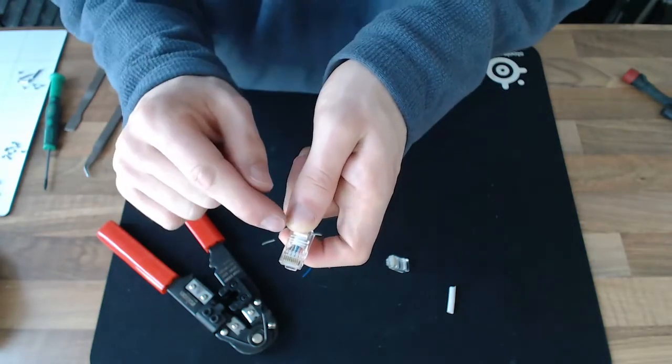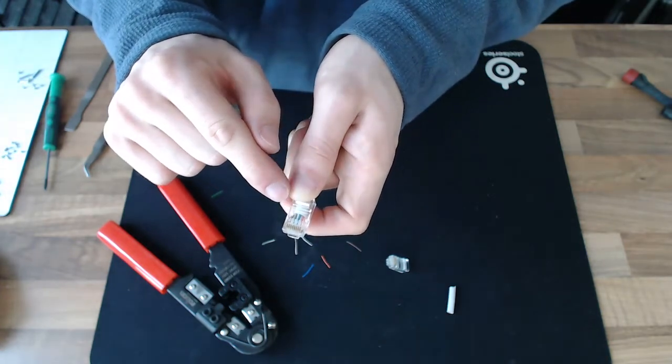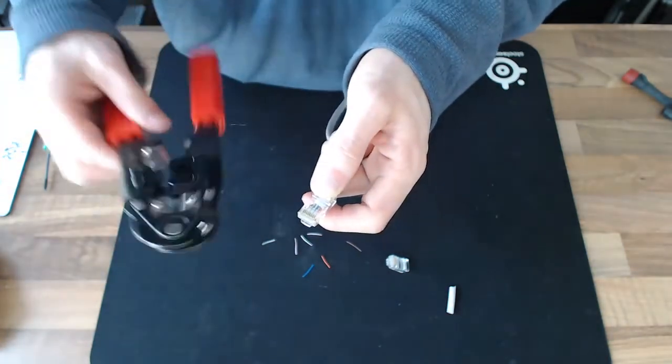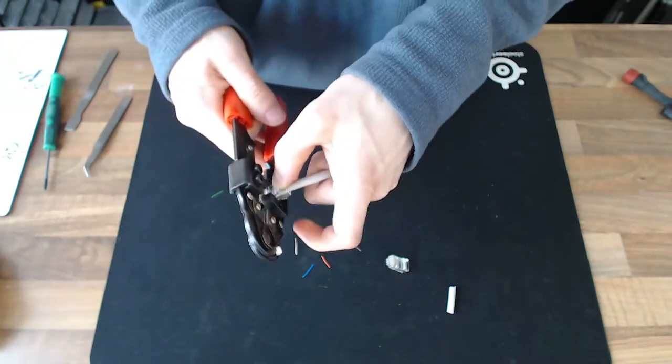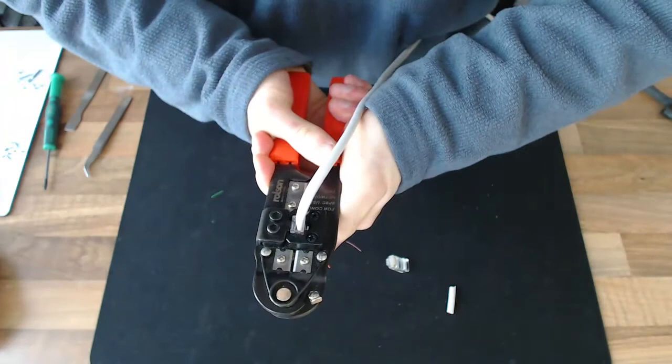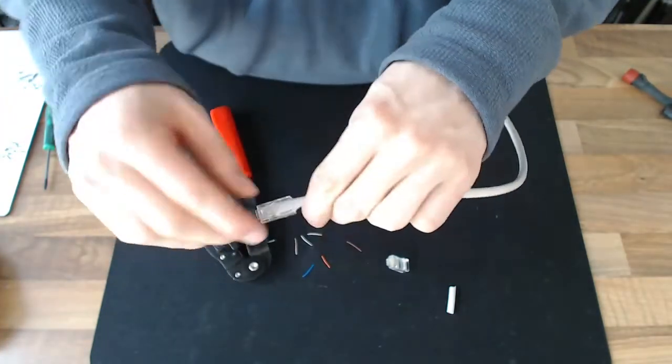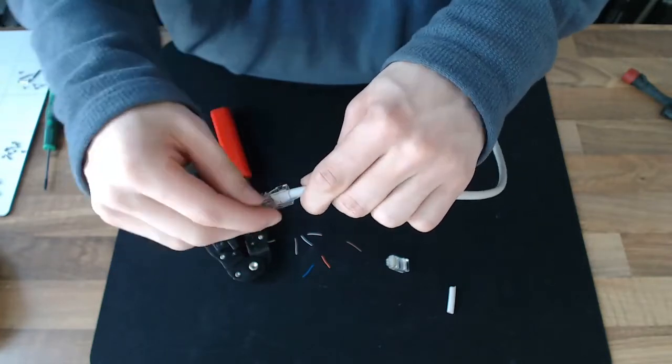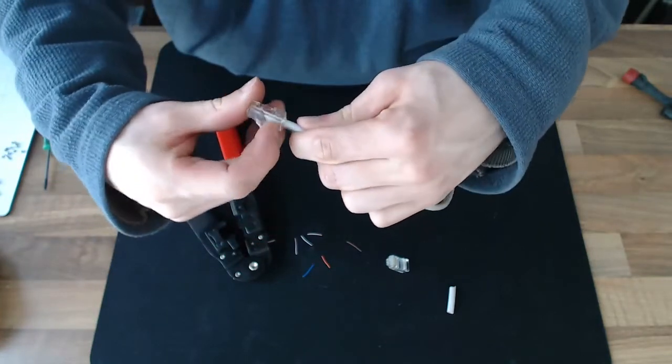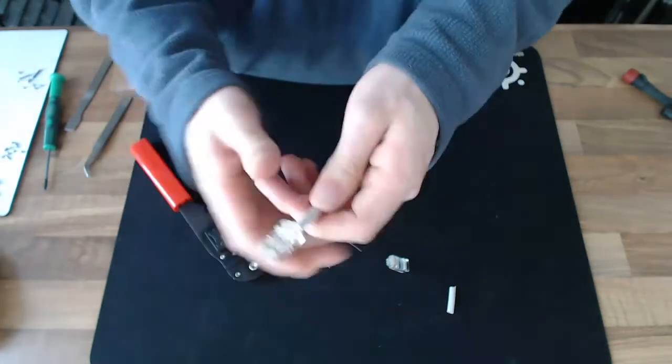And final check. Check your order one more time, just to make sure that nothing has jumped out of place while you were threading it into the connector. And then crimp. So we insert that into the crimp tool and squeeze that as far as it will go. And then that's it. One crimped connector. Just bring that fellow up just so that it's got a nice click on it. And there we go. That's it.